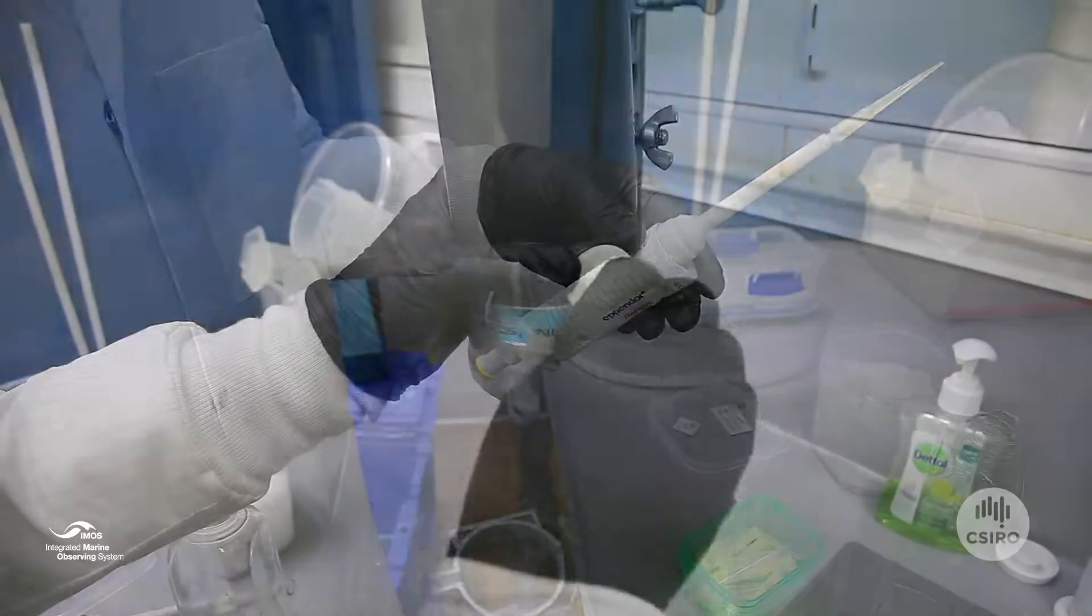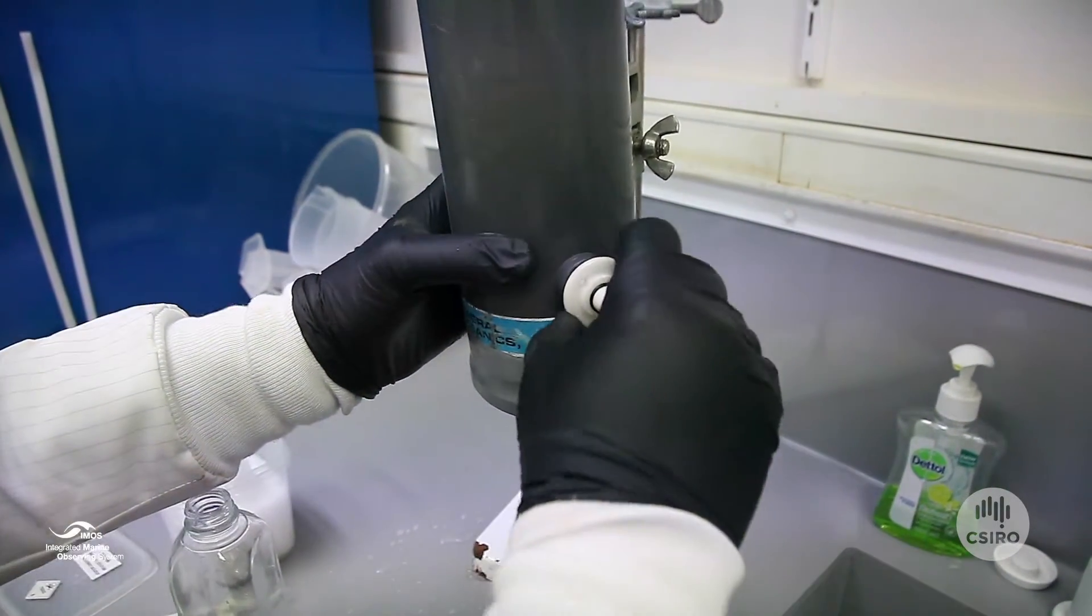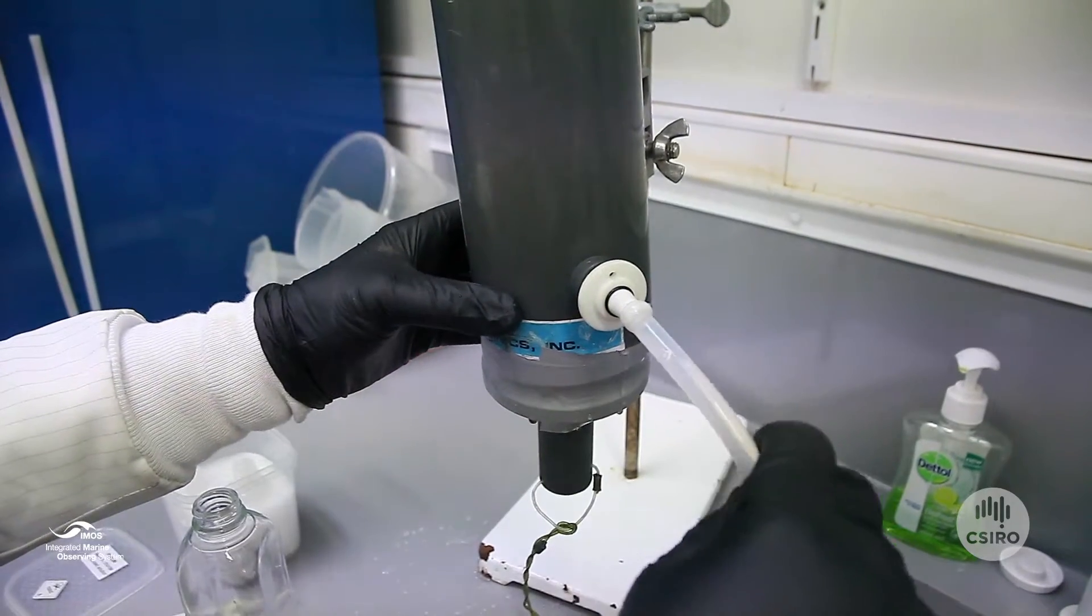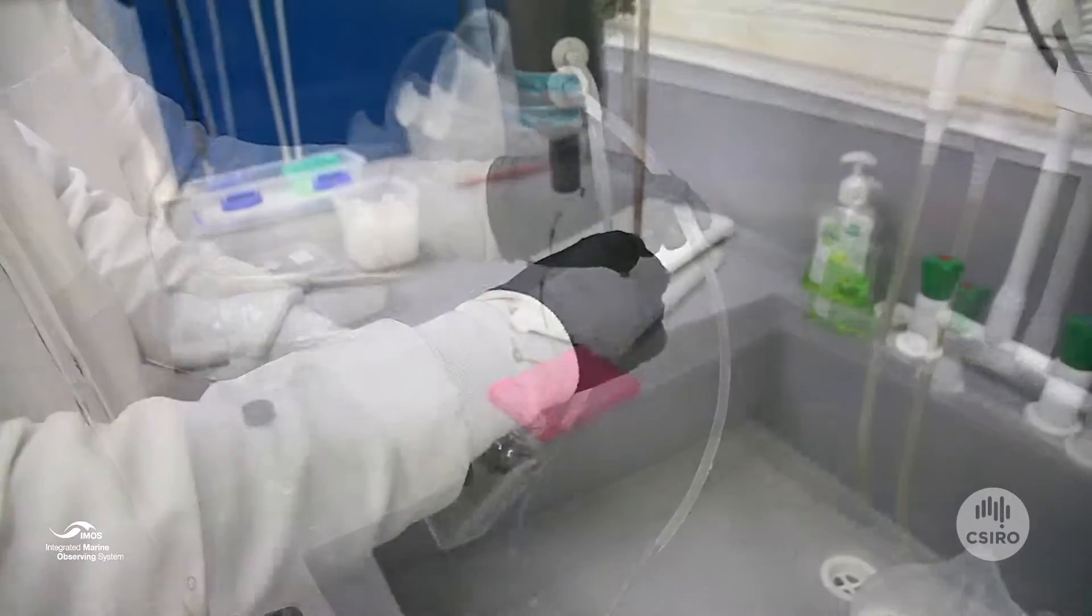Also supplied is a sampling tube. Fit this to the spigot on the Niskin—this can sometimes be quite difficult. Start the flow through the tube.